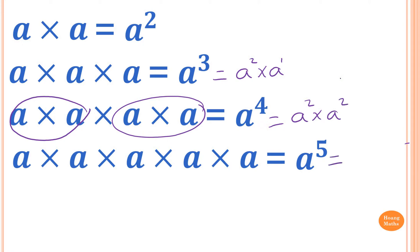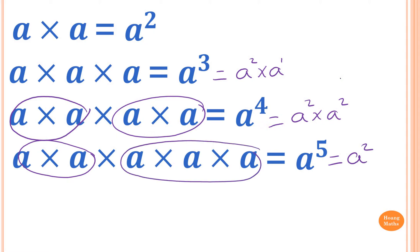And then similarly, A power 5 is exactly the same as A squared times A cubed, because A times A is A squared, and A times A times A is A power 3. So for A to the power 3, 2 plus 1 is equal to 3.